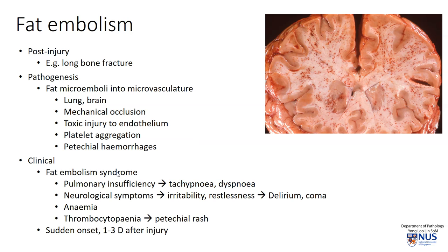Clinically, the fat embolism syndrome usually starts quite suddenly and it happens about one to three days after injury. It can be manifested as pulmonary insufficiency, for example tachypnea or dyspnea, tachycardia as well, and neurological symptoms such as irritability or restlessness. These symptoms can progress to delirium or coma as well.